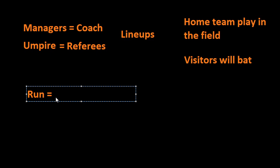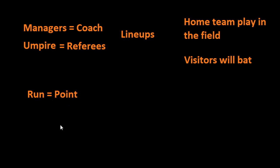The visiting team will be trying to score a run. A run in baseball is a point. In order to score a run, you start as a batter at home plate and then make it around to first base, then second base, then third base, and back to home — that would be one run, or one point, for your team. The home team, because they're on defense, is trying to stop the visitors from scoring any runs.